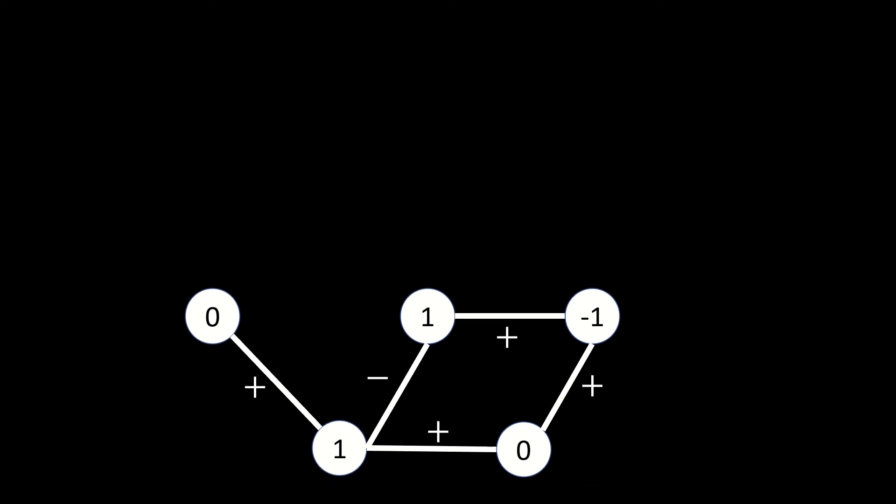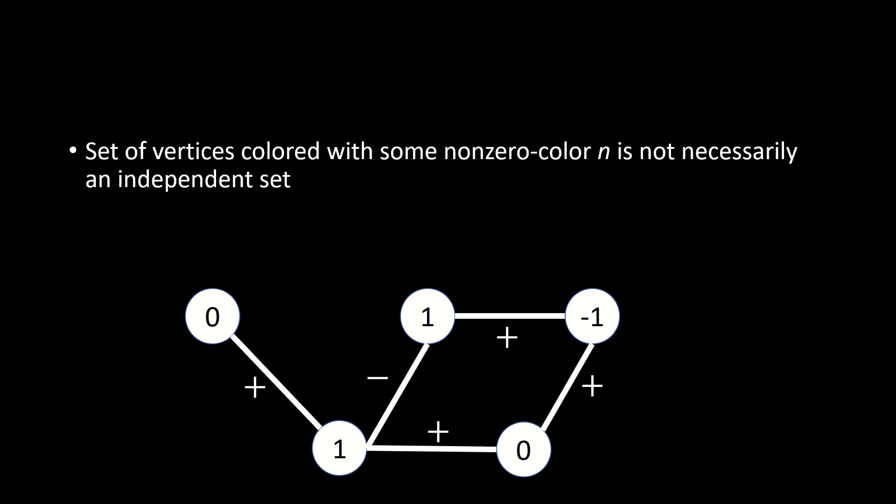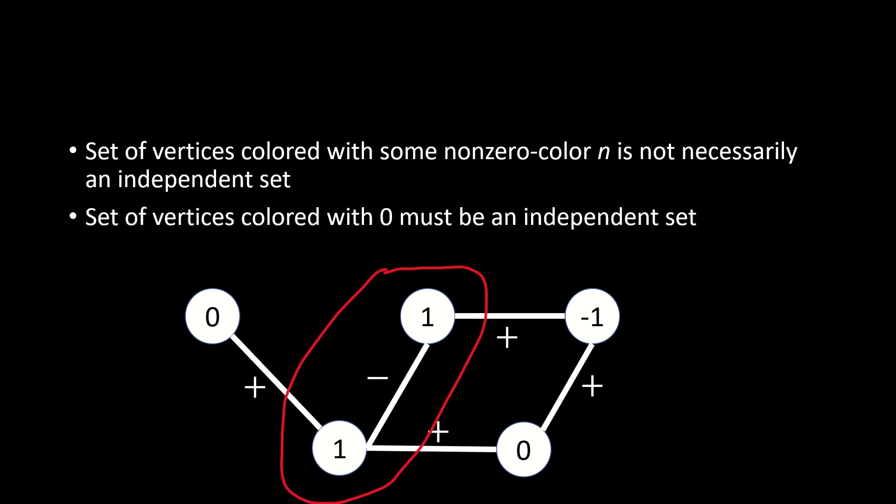Interestingly, in a signed graph, the set of vertices colored with some non-zero integer n is not necessarily an independent set, as it must be in an unsigned graph. This is because vertices that are adjacent via a negative edge are allowed to be colored with the same integer. However, even in a signed graph, the set of vertices colored with 0 must be an independent set, because since 0 is its own additive inverse, we cannot color both vertices linked by a negative edge with 0, and we also cannot color both vertices linked by a positive edge with 0, because the endpoints of a positive edge must have distinct colors.